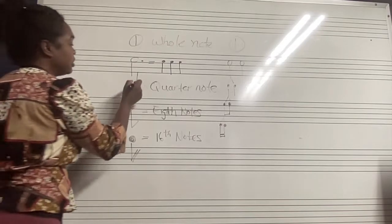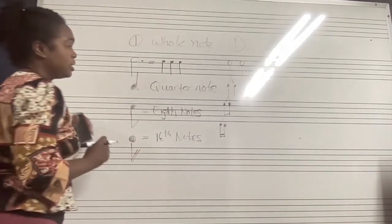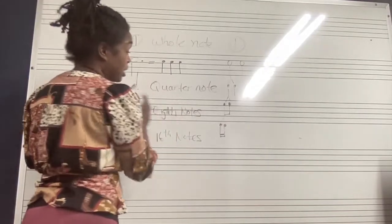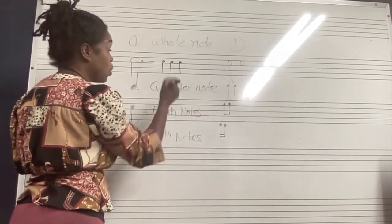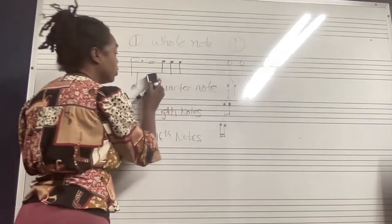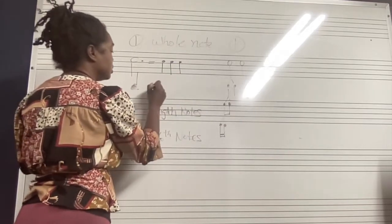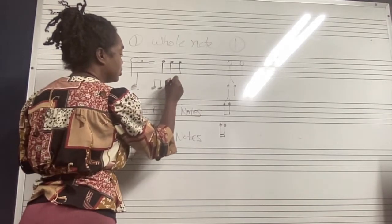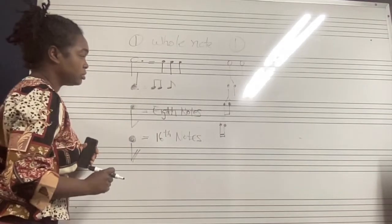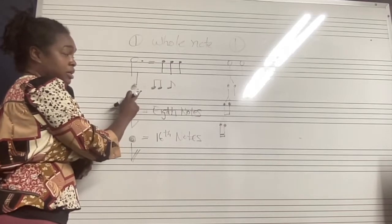If you put a dot next to a quarter note, and if you cut the quarter note in half it gives you two eighth notes, then it's just going to give you one more eighth note. So you're going to actually have three eighth notes. The dot counts for one half of the main note.